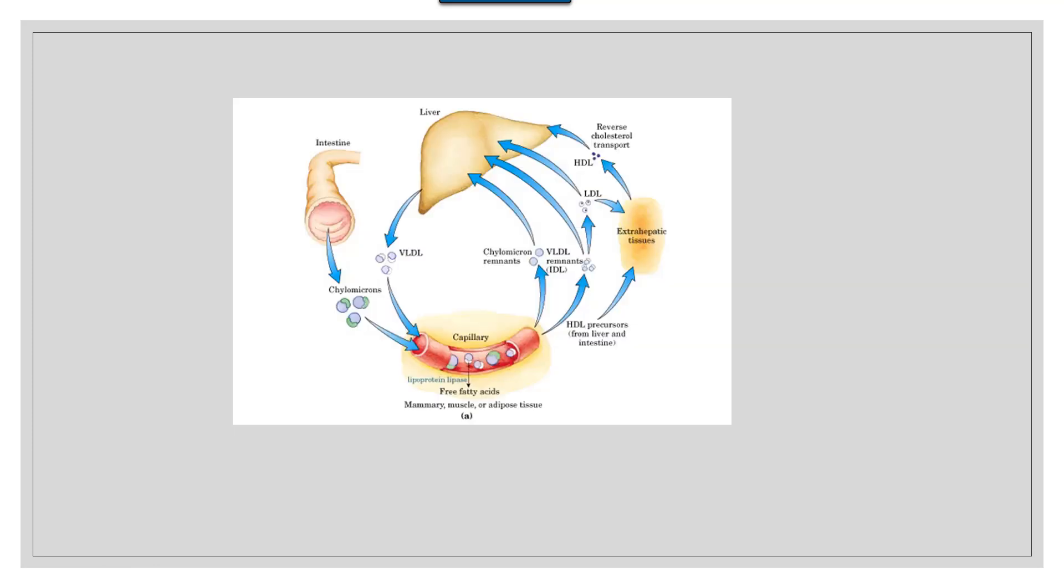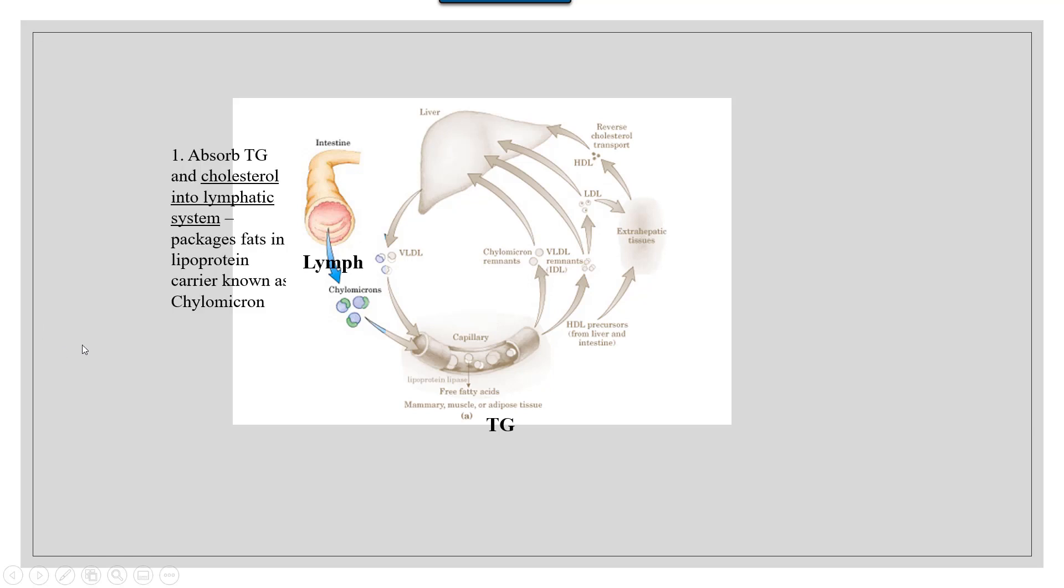Once the fats are absorbed into the lymph, a complicated process of transport begins. Once in the lymphatic system, the triglycerides and other fats will be packaged as lipoproteins. The first lipoprotein is the chylomicron.